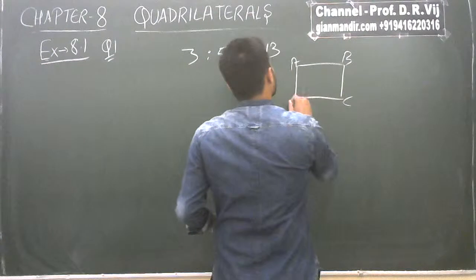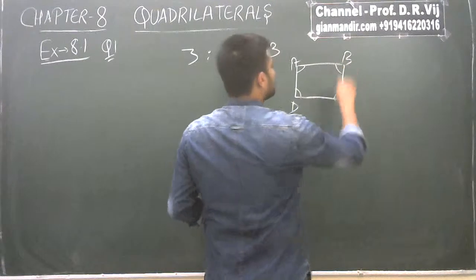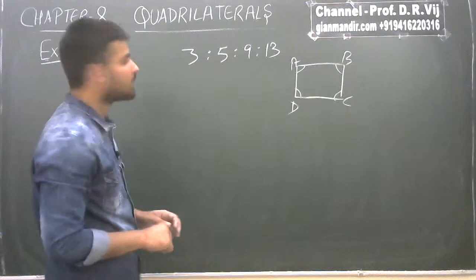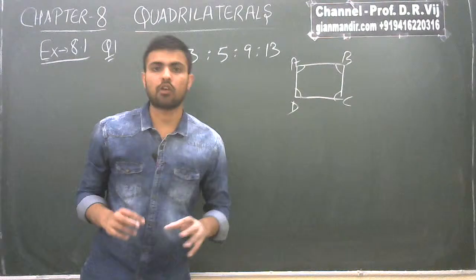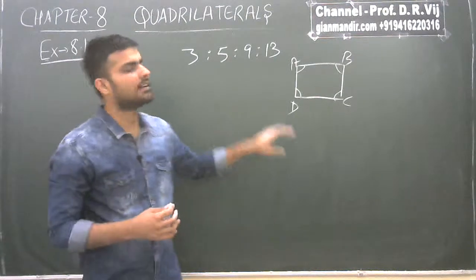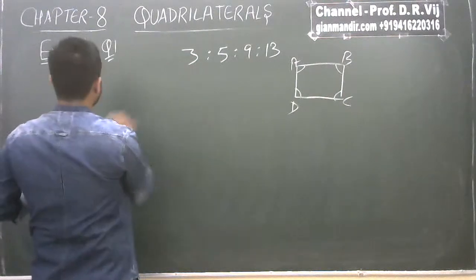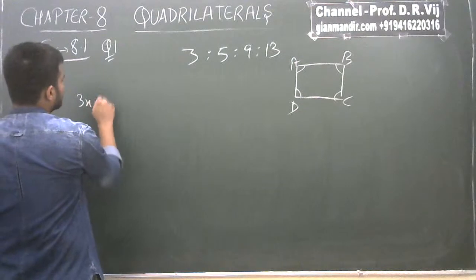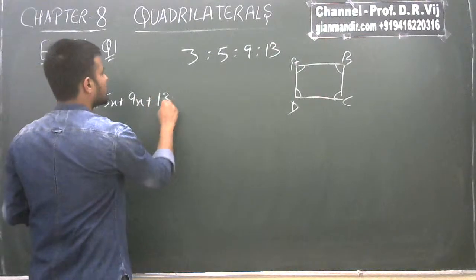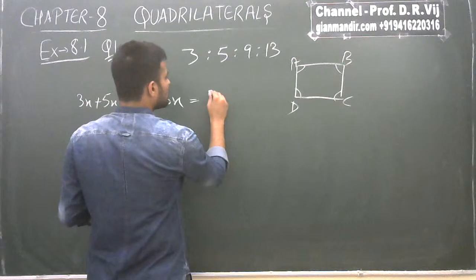Let's say the quadrilateral is ABCD. The ratio of all the angles is given to us and they want us to find the exact angles. We all know that the sum of all angles of a quadrilateral is equal to 360 degrees. So if we take the angles as 3x, then 3x plus 5x plus 9x plus 13x should be equal to 360 degrees.